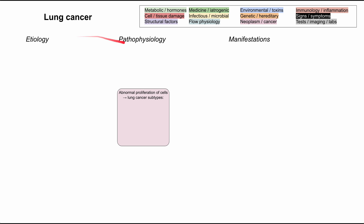The central pathophysiology of lung cancer — and this is a pretty high-level overview — is an abnormal proliferation of cells, which results in several different subtypes. First, you have the neuroendocrine tumors, which includes small cell lung cancer and bronchial carcinoid tumor.